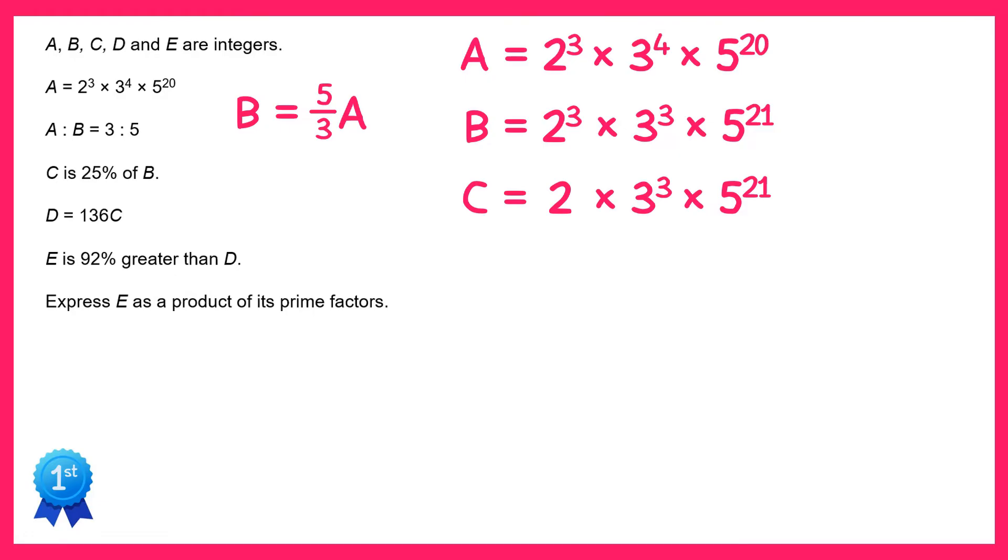Now let's move on to the next part, so it says D equals 136C. I'm going to prime factorize 136 and it equals 2 to the power 3 times 17. So all I need to do to get D is multiply C by this.